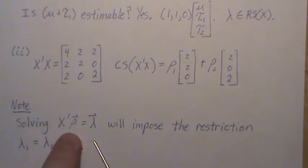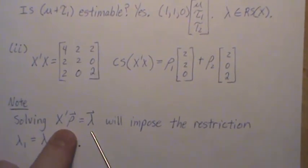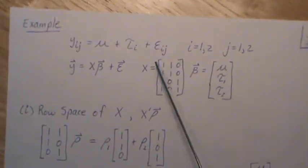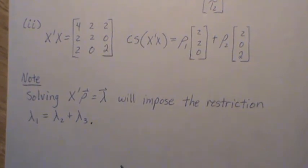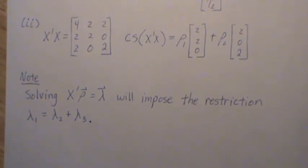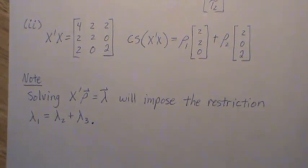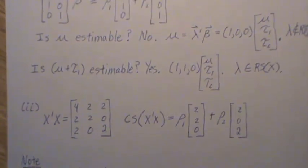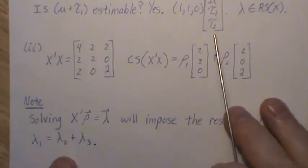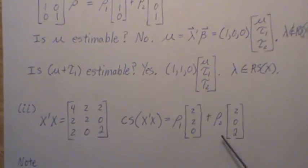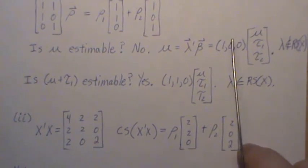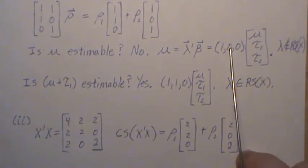One other point: for Theorem 1, solving this out in this case also imposes the restriction that lambda 1 equals lambda 2 plus lambda 3 — every design matrix is a little different, but I encourage you to solve by hand for practice. This is another restriction that has to hold. Looking at our lambdas: 1, 1, 0 satisfies lambda 1 equal to lambda 2 plus lambda 3, so it meets this restriction and is in the row space. But 1, 0, 0 doesn't meet the restriction — lambda 1 does not equal lambda 2 plus lambda 3 — so we know instantly it's not estimable without even checking the row space.